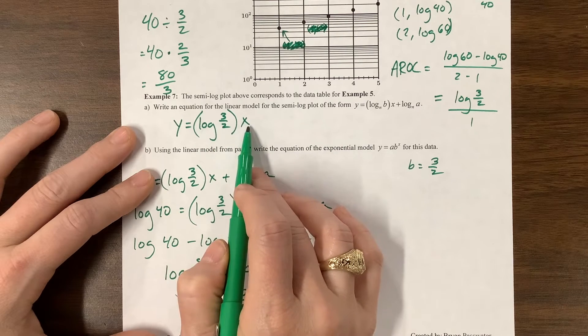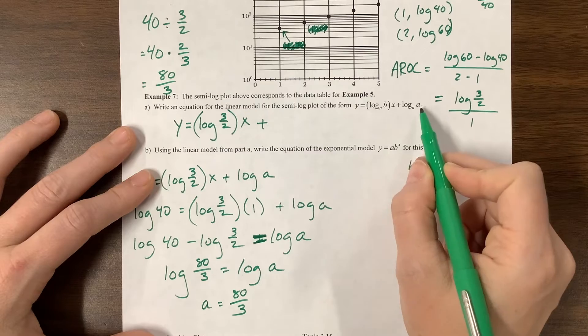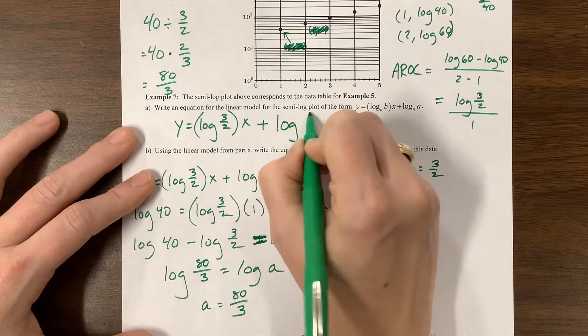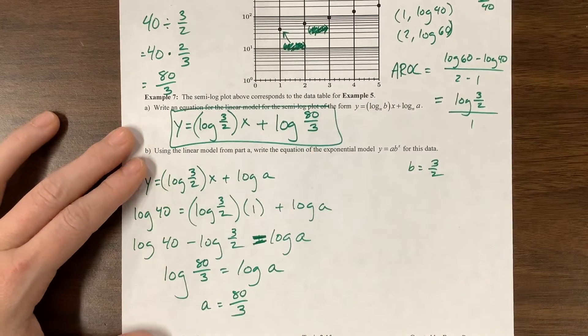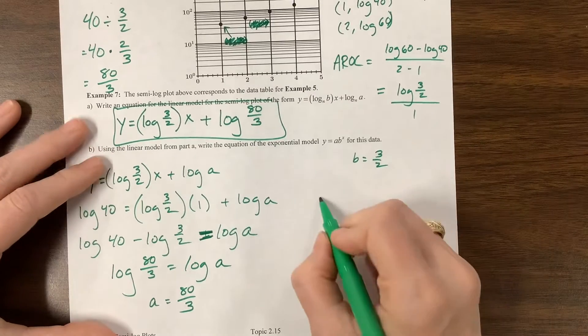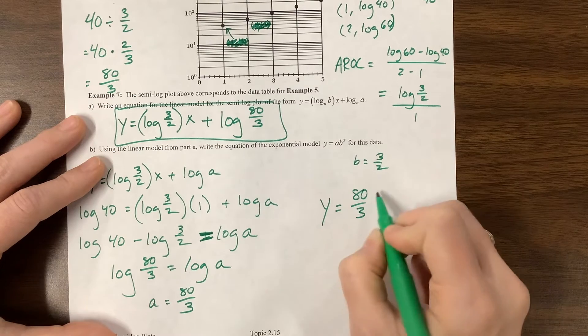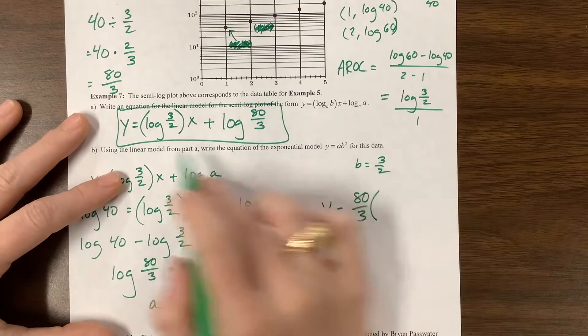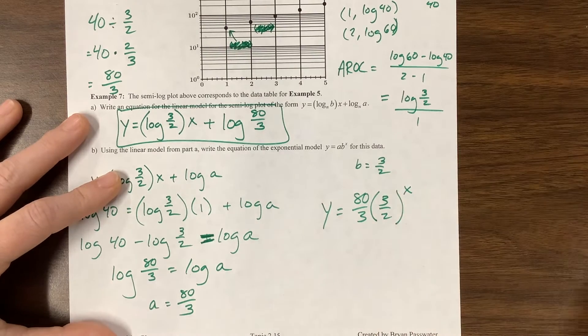And this is that linear equation, which can correspond to y is equal to the a value is 80 over 3, times the b value is 3 halves, to the x power.